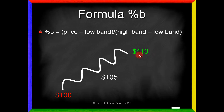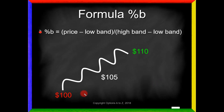On the other hand, what will happen if the current stock price is up at the high of 110? We take the price minus the low band — that's 10 — and divide by the high band minus the low band: 110 minus 100, also 10. So 10 divided by 10 equals 1. Any time your current stock price equals the high band, %B gives you a reading of 1. And if the stock is down at the low of 100, we get 100 minus 100 equals 0, divided by 10 — so zero divided by anything is zero. If the current stock price is on the lower band, you get a reading of zero.